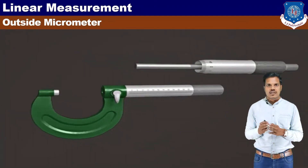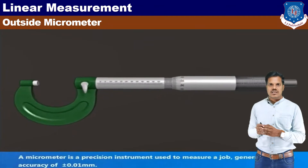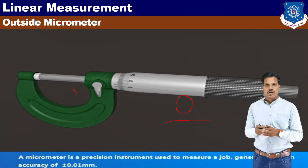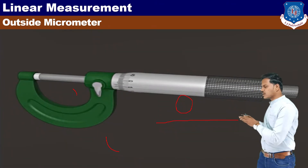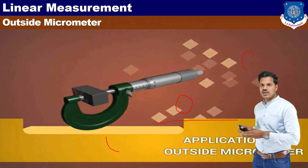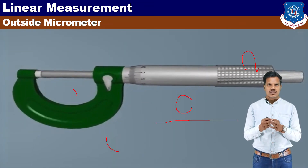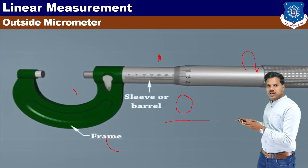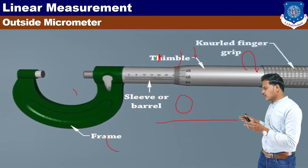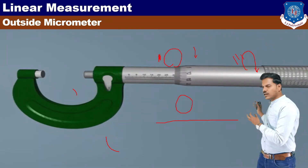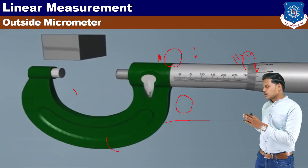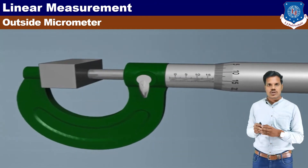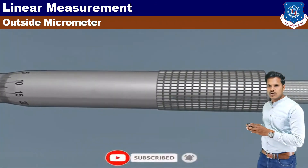This is the outside micrometer and these are the different parts: the spindle, the frame, the barrel, the null finger grip, and the ratchet screw. We keep the workpiece between the anvil and spindle, then rotate the spindle until the workpiece is fixed. Before taking the reading, we apply a little pressure to the ratchet screw to fix it uniformly, then lock it with the locking screw.